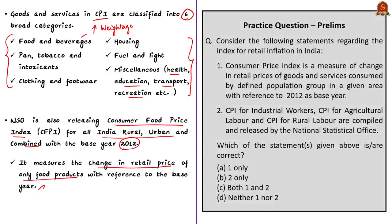Now let's take up the given question. Two statements are given with reference to retail inflation in India. Statement one: CPI is a measure of change in retail prices of goods and services consumed by a defined population group in a given area with reference to 2012 as base year. Statement two: CPI for industrial workers, CPI for agricultural labour, and CPI for rural labour are compiled and released by the National Statistical Office. From our discussion, statement one is correct, but statement two is incorrect — these are compiled and released by the Labour Bureau, not NSO.